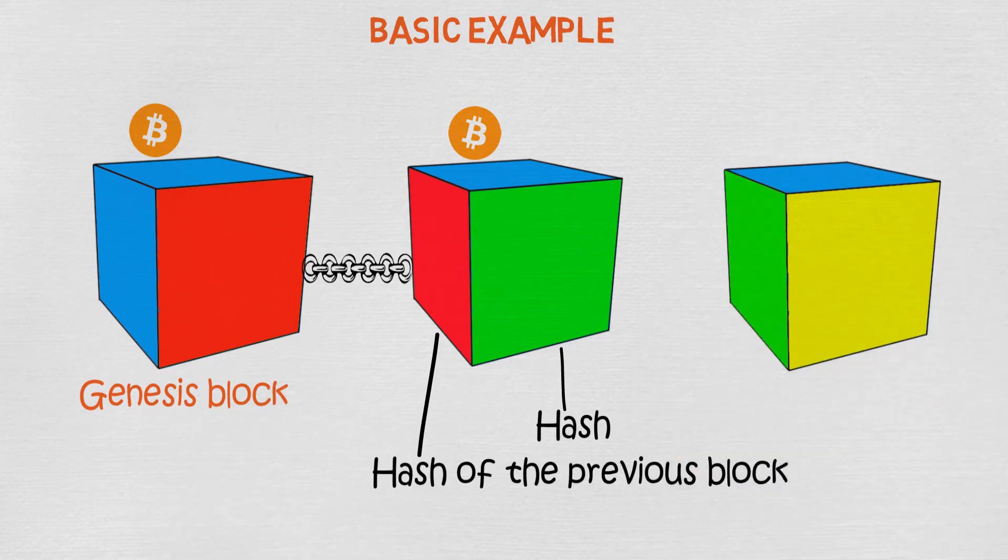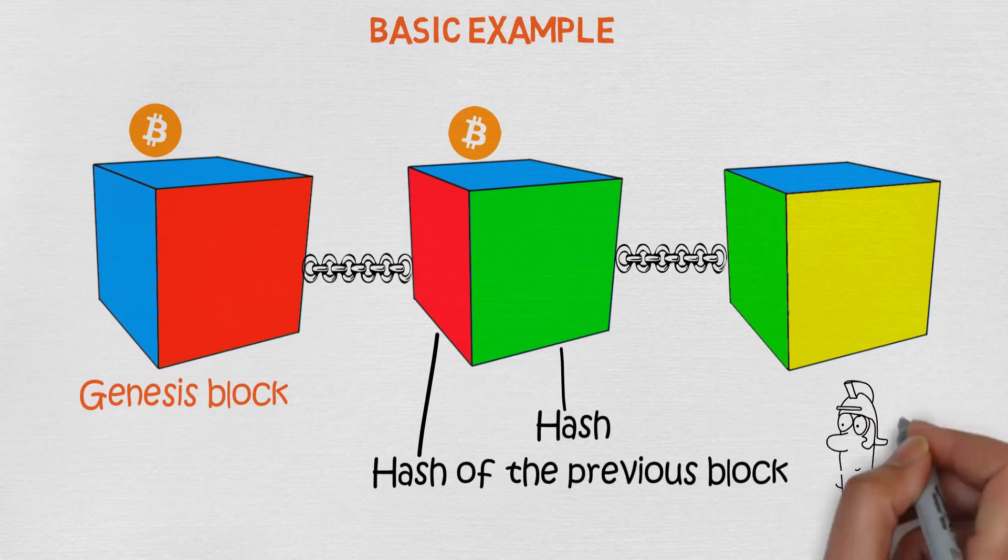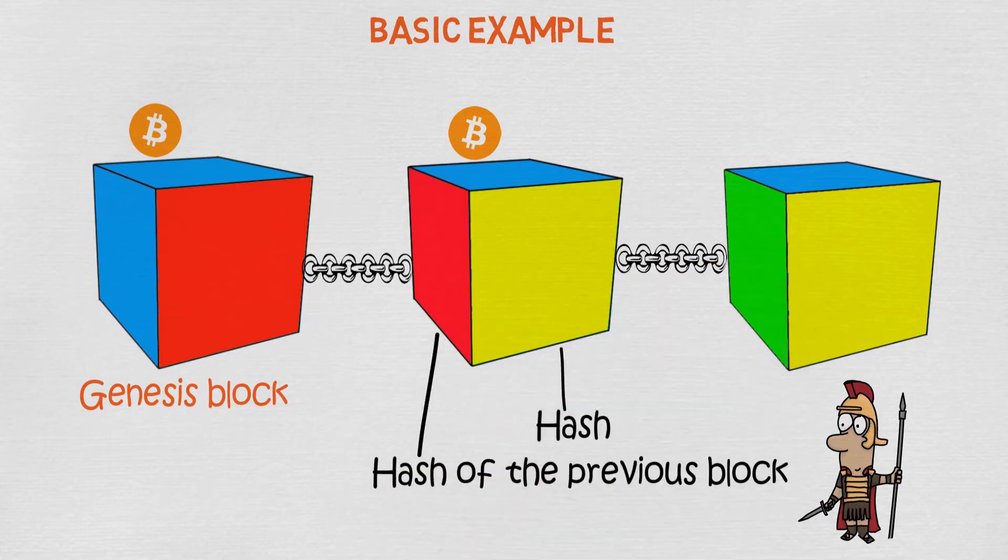Now, when a new block gets added, which takes about 10 minutes with bitcoin, it has a hash of a previous block, so they can connect. This makes blockchain very secure. To manipulate the data you would have to change every block after the one block that you are trying to manipulate. So here, if you change the second block, the hash also changes, so now it doesn't match with the third one.